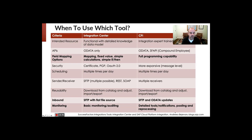For security, on the Integration Center side you've got Certificate, PGP, and OAuth. There are more expansive processes available on CPI — they get down to message-level security, whereas Integration Center security is more at the higher level. Scheduling — no real differences there. For sender and receiver, there are different options available for Integration Center, but of course there's a larger number on the CPI side. I can't think of specific limitations off the top of my head, but you could definitely run into some.